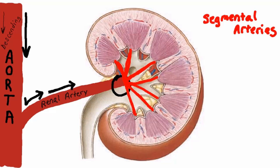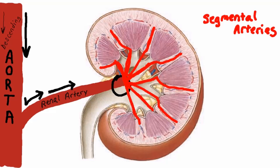Once the segmental arteries reach the base of the pyramids, they go up through the interlobes — the columns of cortical tissue in between each pyramid. These columns make up the sides and edges of each lobe of the kidney. Since these arteries travel in between the lobes of the kidneys, they are called interlobar arteries.